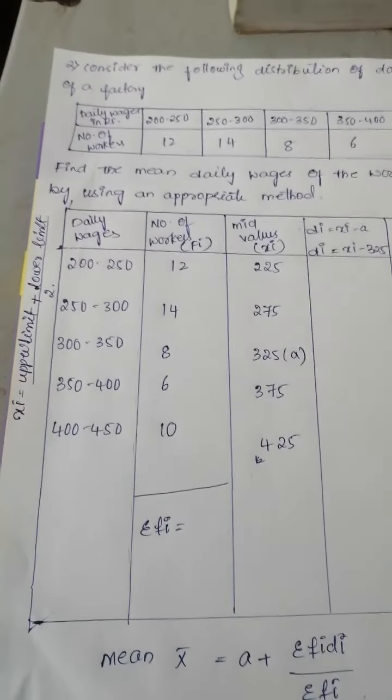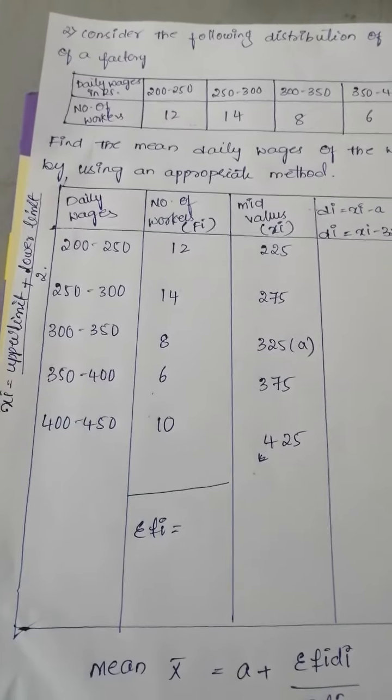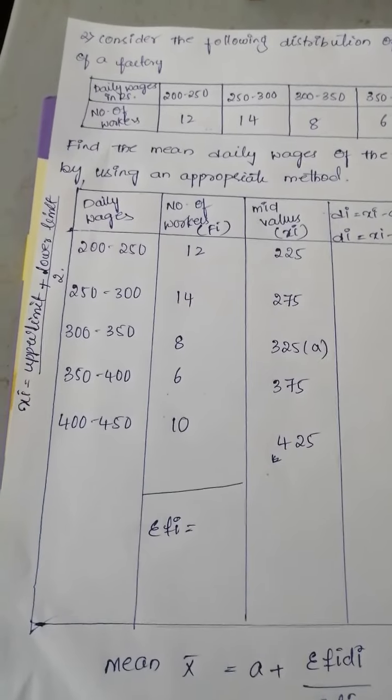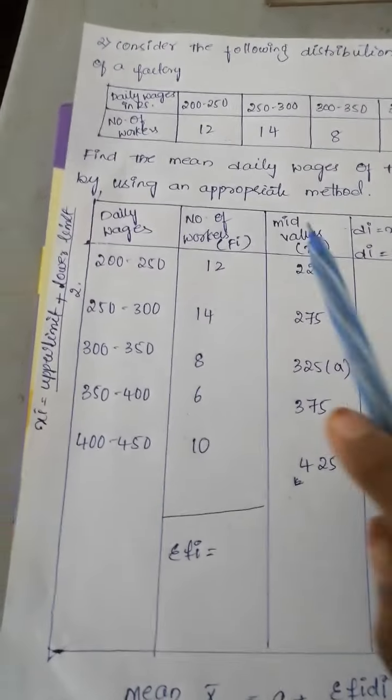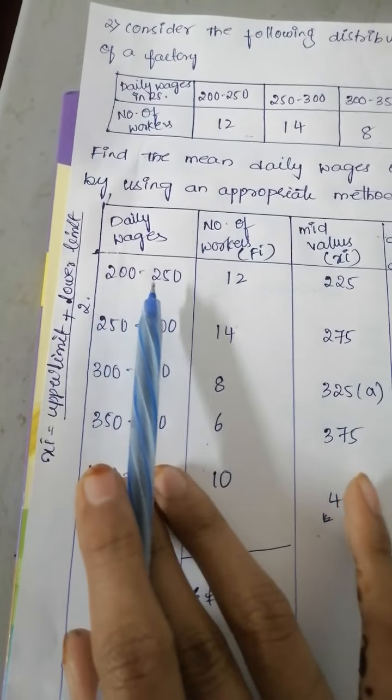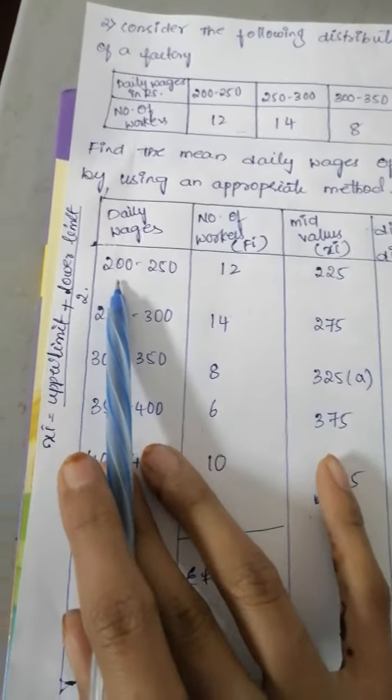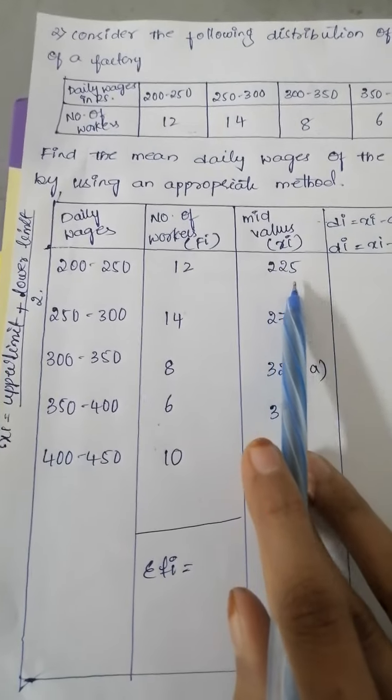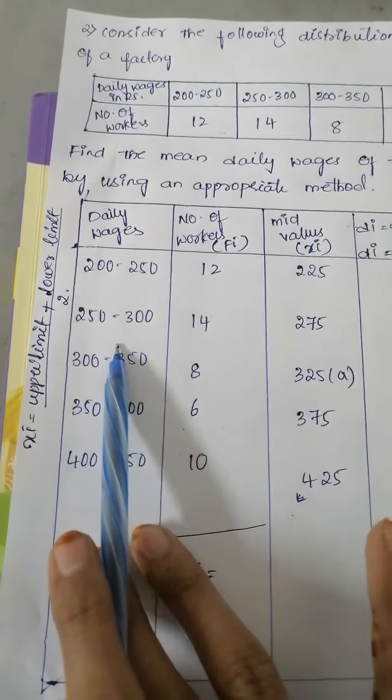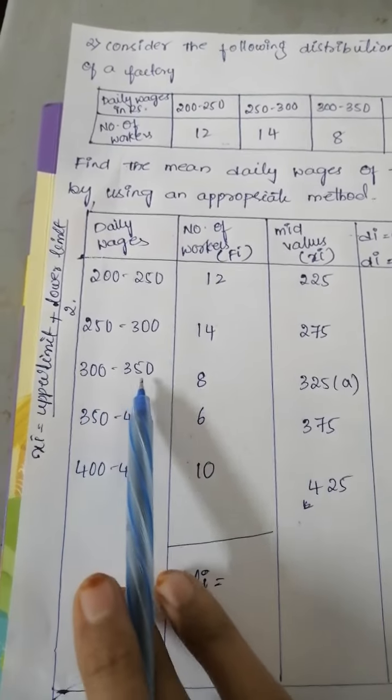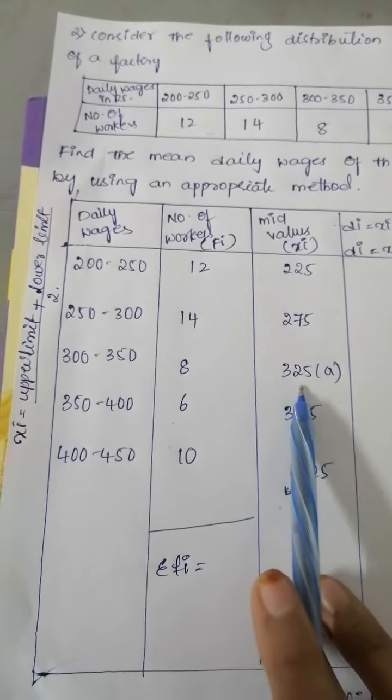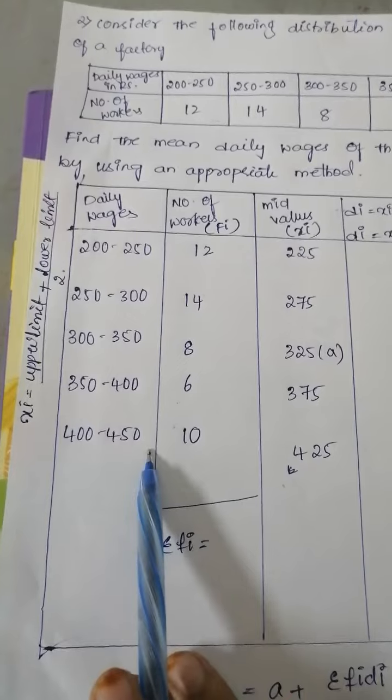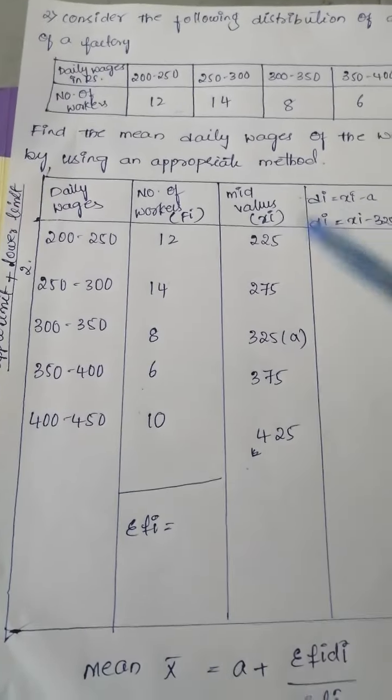Next, mid value. I have already told you how to find the mid value. Mid value Xi equal to upper limit plus lower limit by 2. So 200 plus 250 by 2 is 225. 250 plus 300 by 2, 275. 300 plus 350 by 2, 325. 350 plus 400 by 2, 375. 400 plus 450 by 2, 425. This is all mid values.